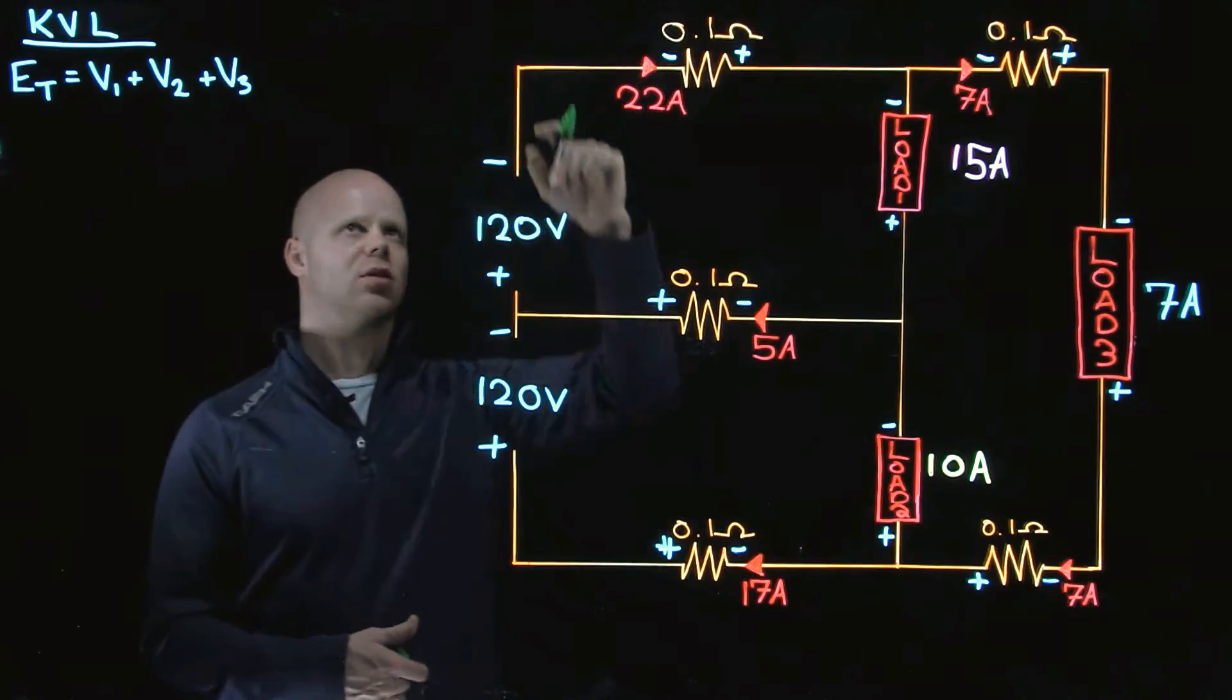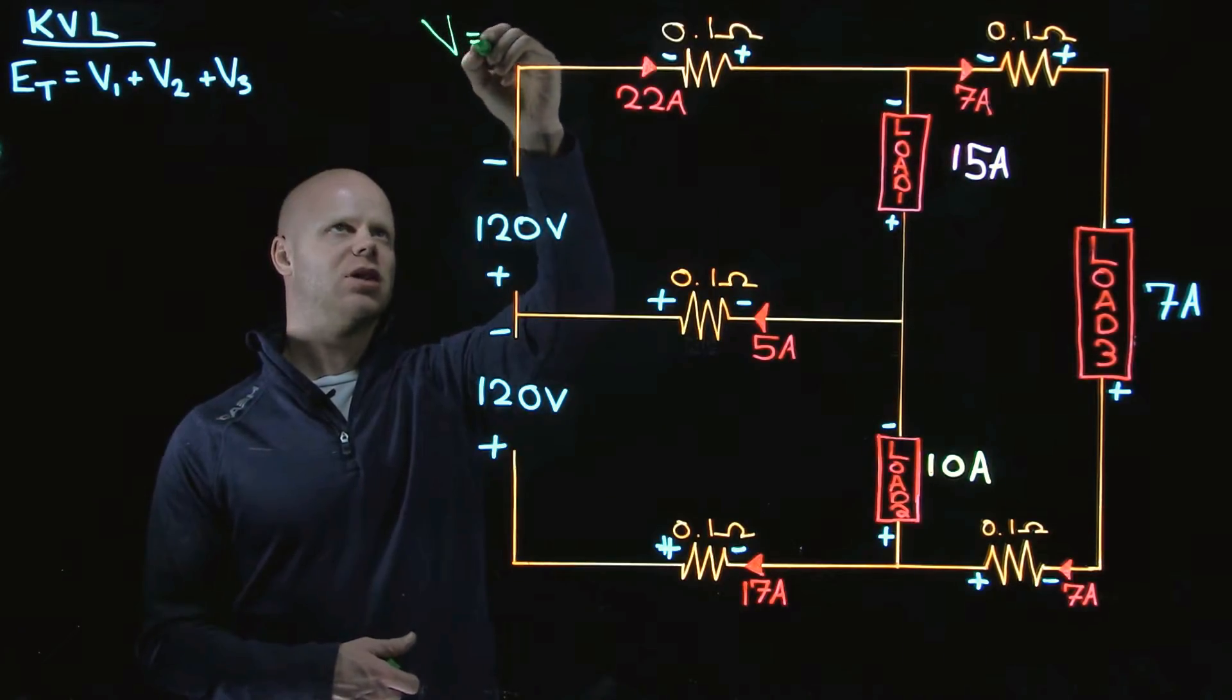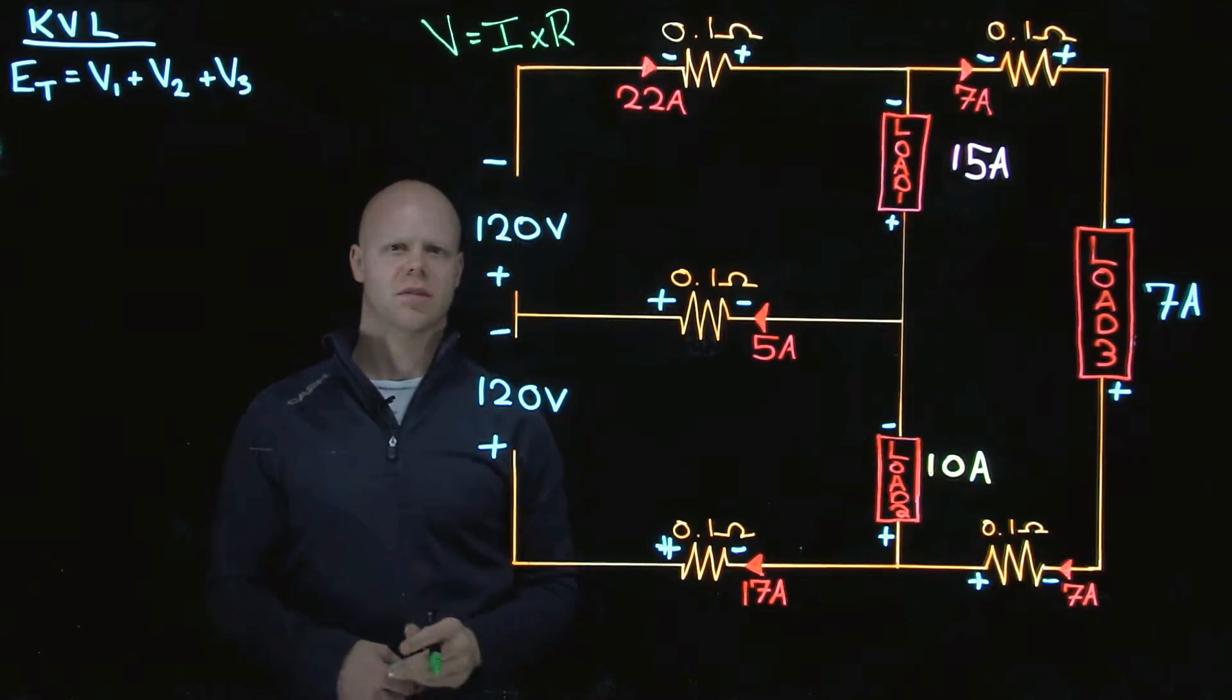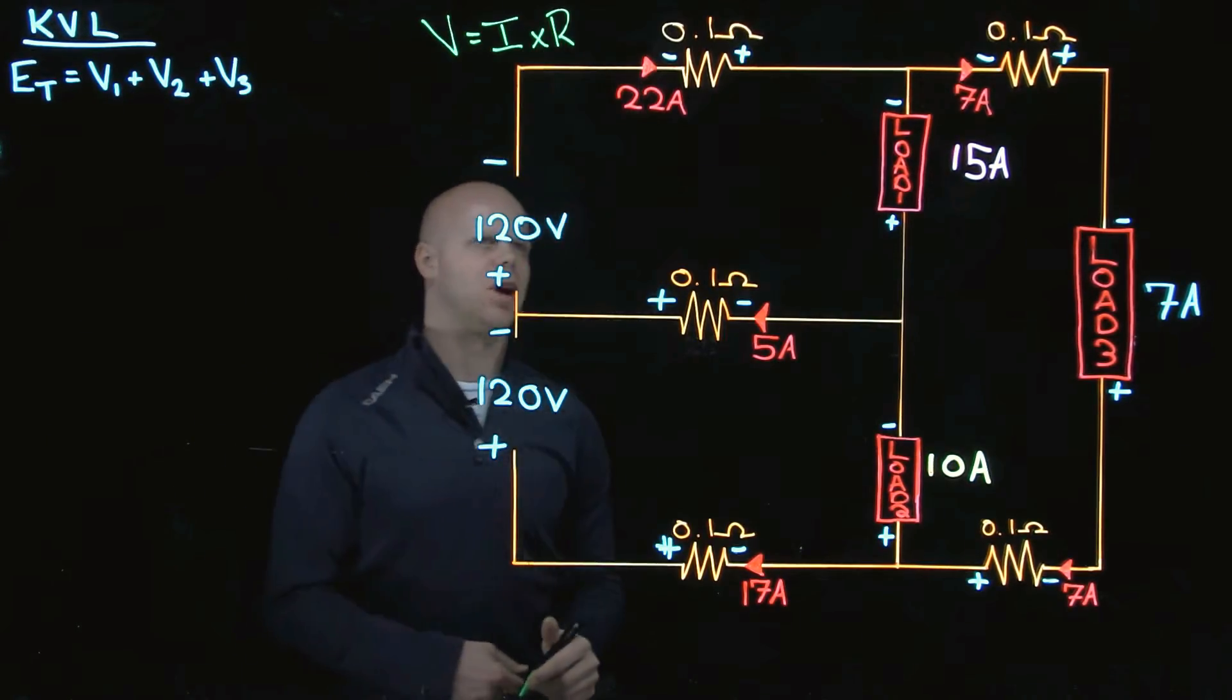At each individual point when I have an amperage and an ohmic value, I can calculate what that voltage drop is. The voltage drop is going to equal the current times the opposition to current flow. That's what's going to give me my volt drop.